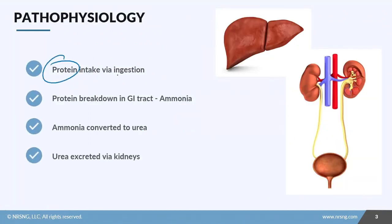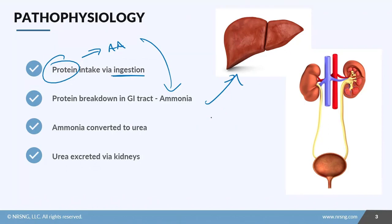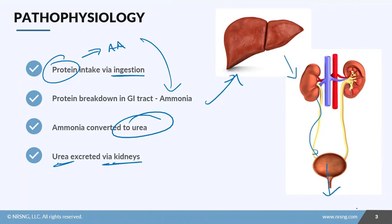Let's talk about how we get this value. As we eat food, we take in protein via the GI tract, and that protein is converted to amino acids. Those are further converted into ammonia, and then the ammonia is sent to the liver where it's converted to urea. The urea is then sent to the kidneys, down the ureter, into the bladder, and out of the body.